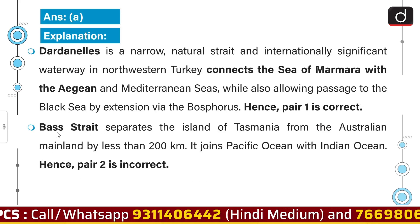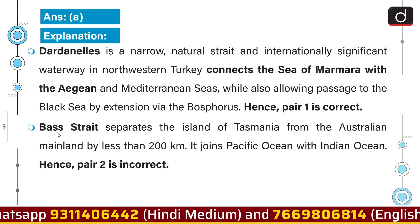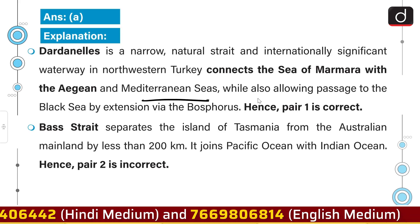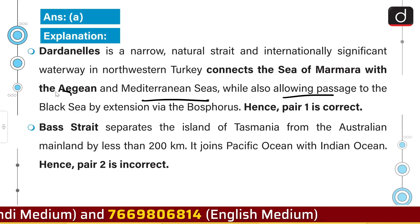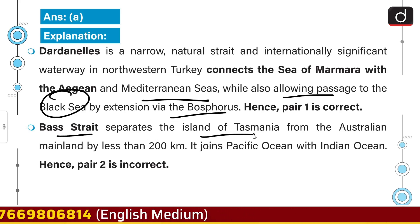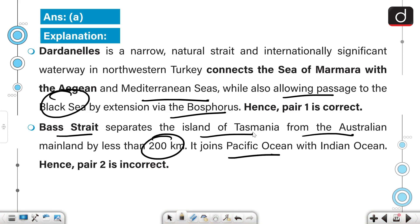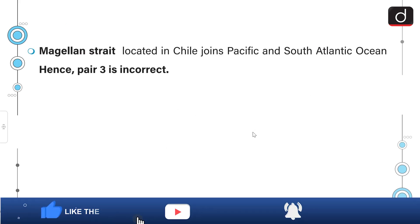The Dardanelles is a narrow natural strait, an internationally significant waterway in north-western Turkey connecting the Sea of Marmara to the Aegean and Mediterranean Sea, while also allowing passage to the Black Sea via the Bosphorus. Bass Strait separates the island of Tasmania from the Australian mainland by less than 200 km, joining the Pacific Ocean with the Indian Ocean. Magellan Strait is located in Chile, joining the Pacific and South Atlantic Ocean.